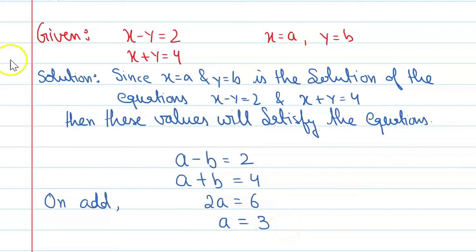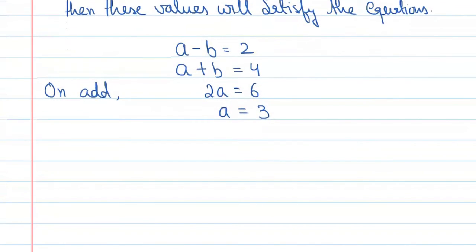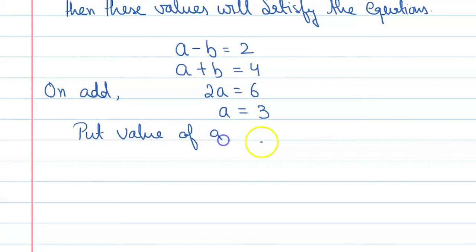Alright, now put the value of a in this equation. Put value of a in a minus b equal to 2. So 3 minus b equal to 2, minus b equal to 2 minus 3. So minus b is equal to minus 1, or you can say b is equal to 1.